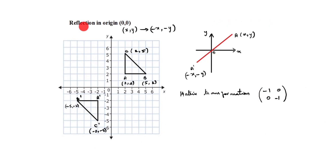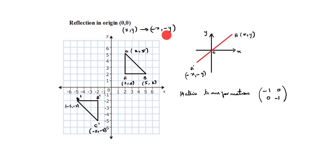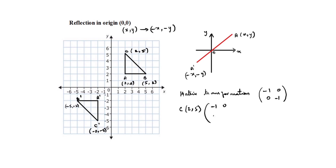Fifth type: reflection in the origin, which is 0 comma 0. The given image is x comma y, and the reflected image is minus x comma minus y. For example, c is 2 comma 5, so c reflected is minus 2 comma minus 5. The matrix transformation for reflection in the origin is minus 1, 0, 0, minus 1.